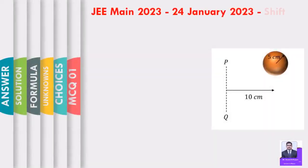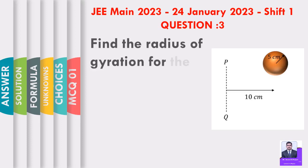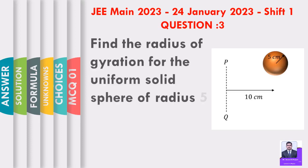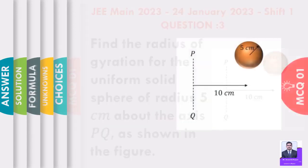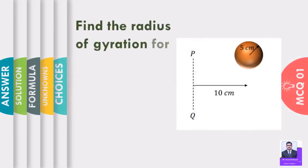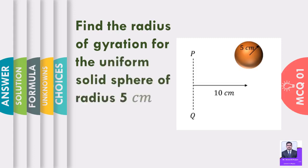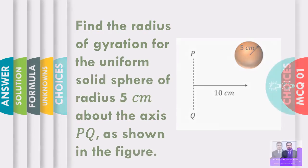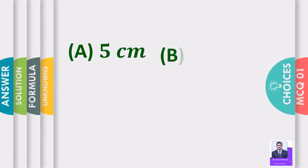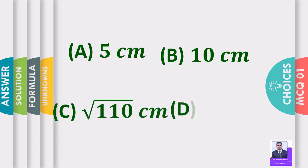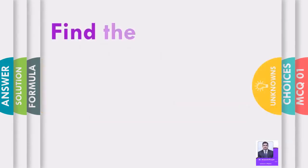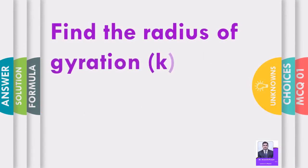JEE Main 2023, January 2023, Shift 1, Question 3. Find the radius of gyration for a uniform solid sphere of radius 5 centimeter about the axis PQ as shown in the figure. Options: A) 5 cm, B) 10 cm, C) root 110 cm, D) root 90 cm.